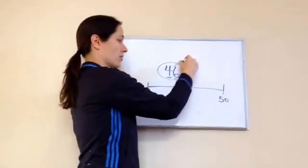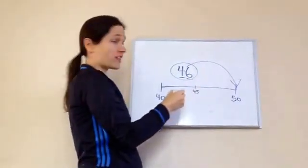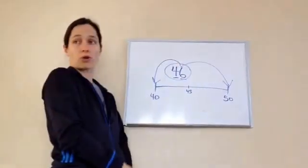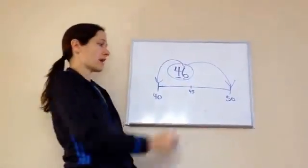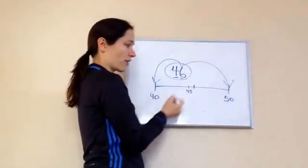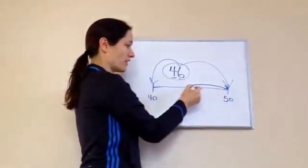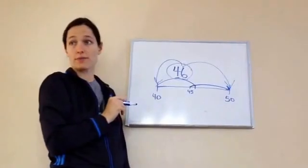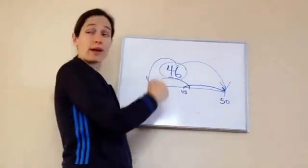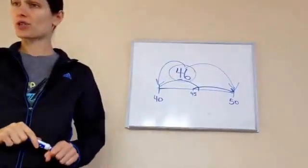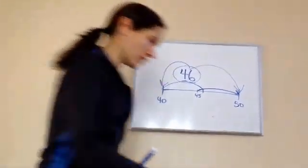Now, where would 46 go? To the nearest ten as 50 or to the nearest ten as 40? 50, because it passes the 45. It's closer to 50 rather than all the way to 40. So, if I told you to round this 46 to the nearest ten, you would tell me 50. Very good.